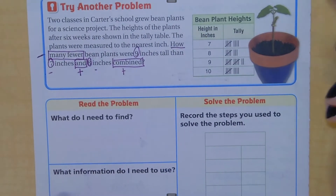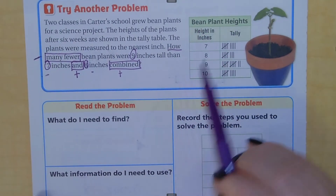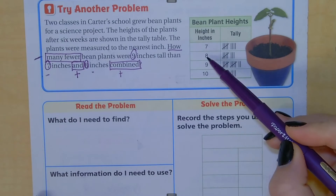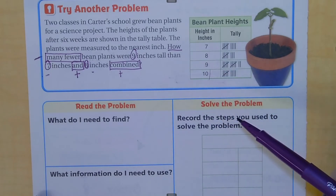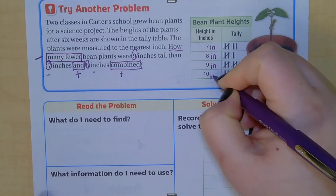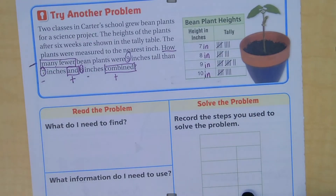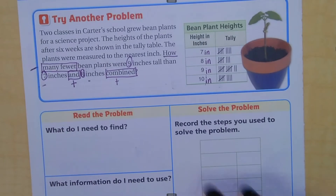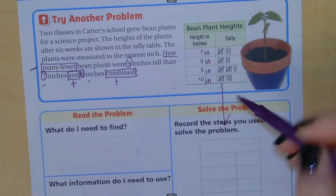Before we get to all that, let's look at our tally chart. The title is 'Bean Plant Heights,' and our categories are height in inches — so that means we have seven inches, eight inches, nine inches, ten inches, and then the tally marks. Don't get confused when there are numbers on this side. If it helps, label them so you remember these are inches. Now let's come down here and convert this tally table into a frequency table.